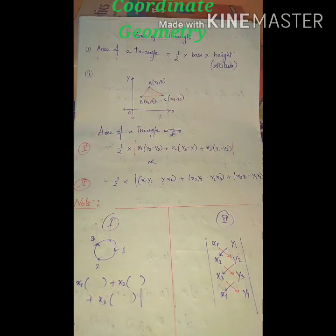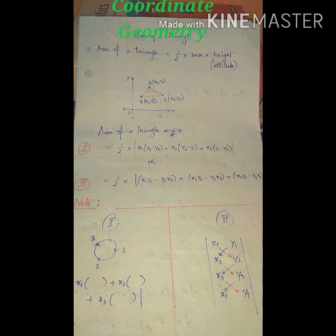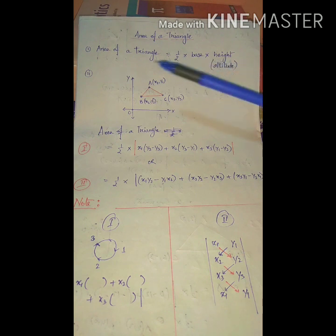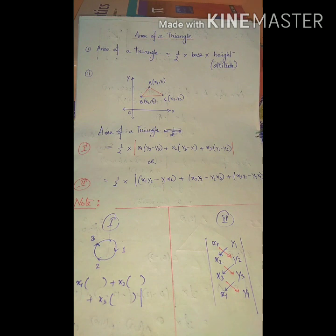Good morning students. Today we start our third topic: area of a triangle. We have already completed the distance formula and the section formula, so this is the last topic. In earlier classes we studied how to calculate the area of a triangle if the base and height are given. That formula, from class 9, is: area of a triangle = half into base into height.